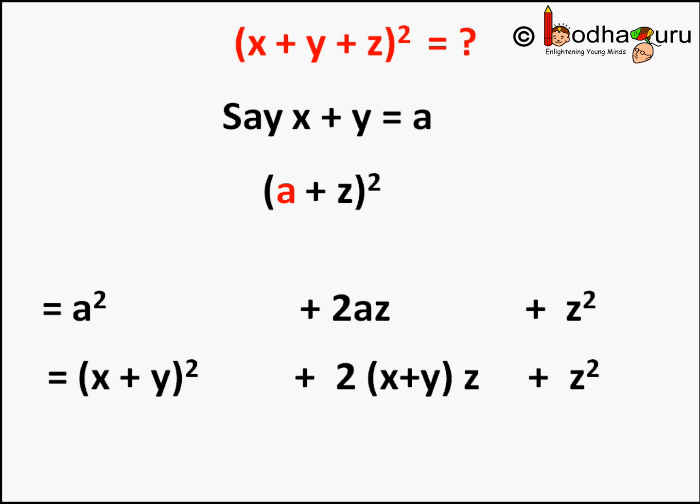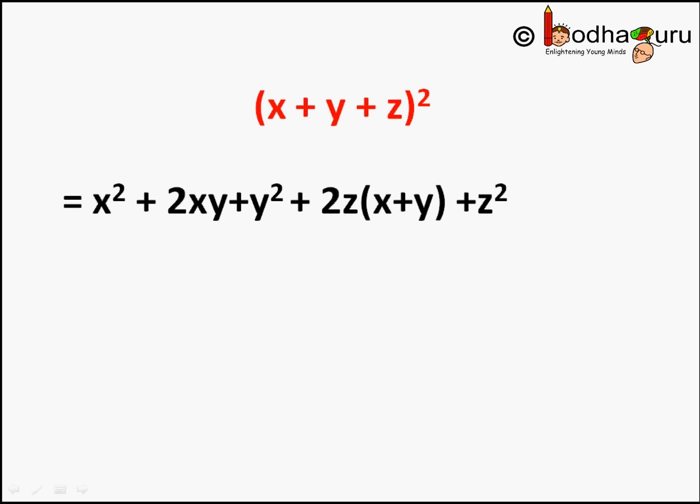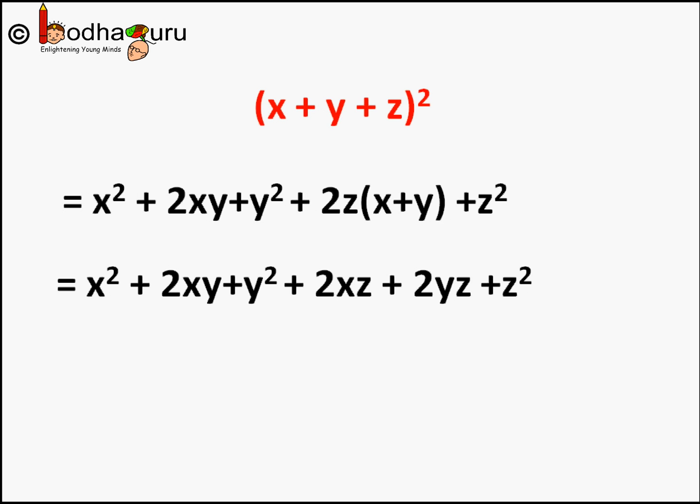Now we put the value of a equal to x plus y. The first term a square becomes x plus y whole square. The second term 2az becomes 2 times x plus y into z, plus z square. Simplifying further, we open x plus y whole square as x square plus 2xy plus y square, and 2z into x plus y becomes 2xz plus 2yz. So it comes out to be x square plus 2xy plus y square plus 2xz plus 2yz plus z square.